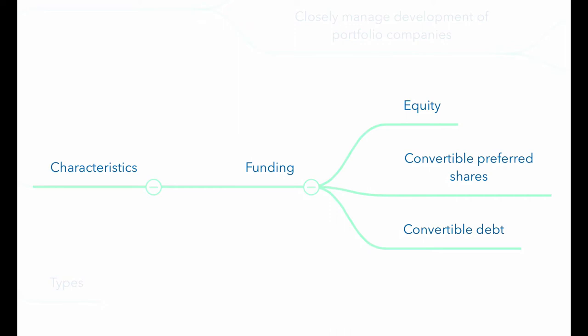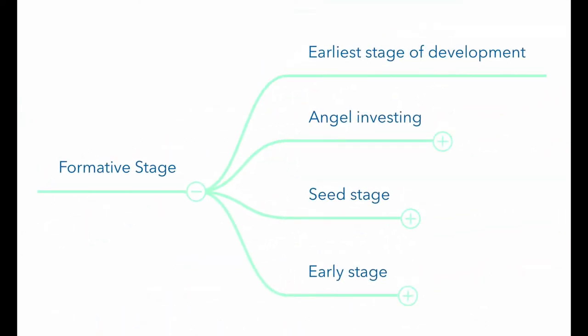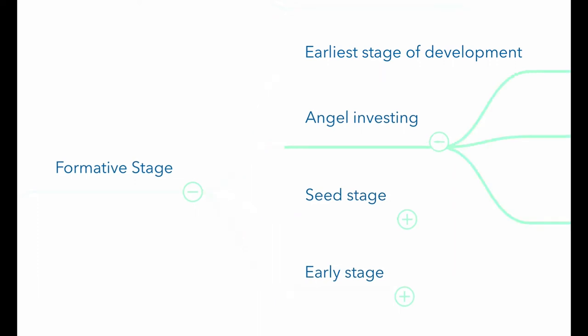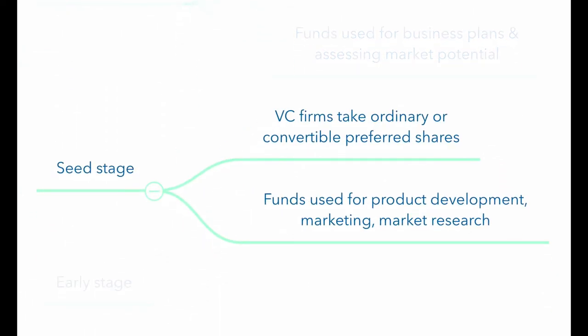The VC fund typically gets an equity interest in the company in which it is investing and may also provide debt financing. Depending on the stage of financing, there are three types of investments. Formative stage financing occurs when the company is still in the process of being formed, and breaks down into three stages: angel investing, which is capital provided at the idea stage for business plans and assessing market potential, usually from individuals rather than VC firms; and seed stage financing, which supports product development and marketing efforts. This is generally the first stage at which VC funds invest, typically through ordinary or convertible preferred shares.